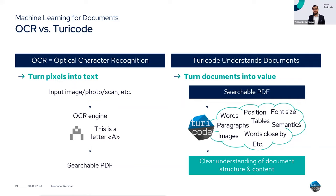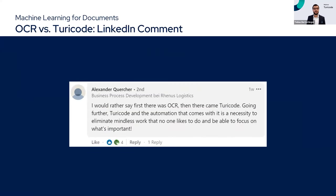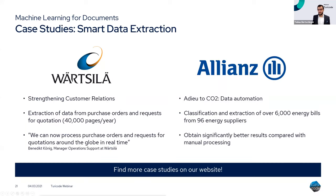What we do is probably best summarized with semantics. Think about our CEO's name: Martin Keller — 'Keller' in English means 'cellar.' If you find the word 'cellar' in a document, it can be a place in a house or a person's name. By applying semantics, we can determine whether this word in a document is a place or a customer's name. What comes out is a clear understanding of the document's structure and content. As one customer put it on LinkedIn: 'I would rather say, first there was OCR, then there came Turicode' — it eliminates mindless work that no one likes.